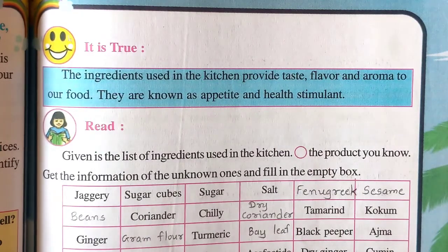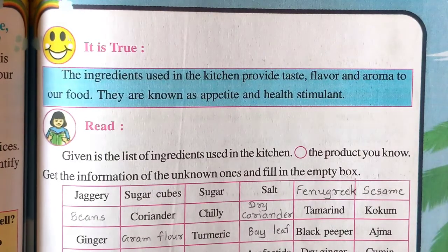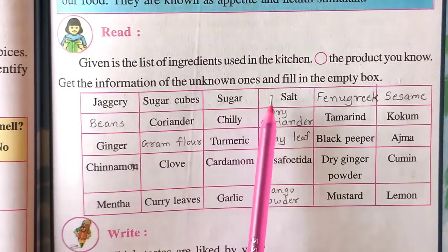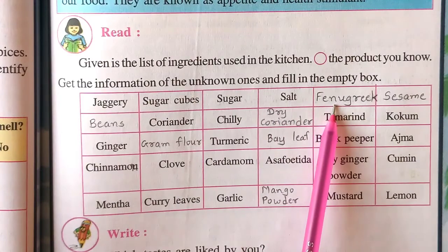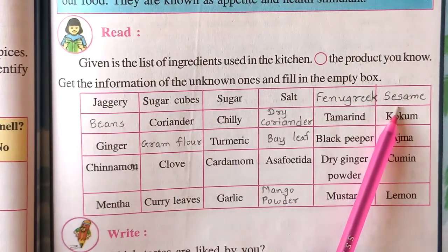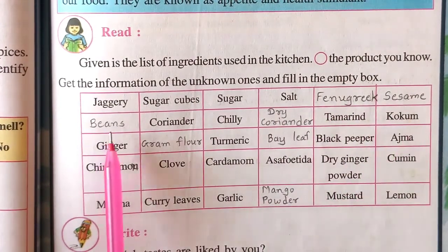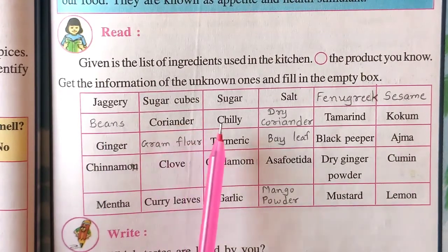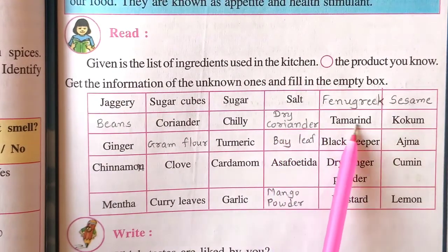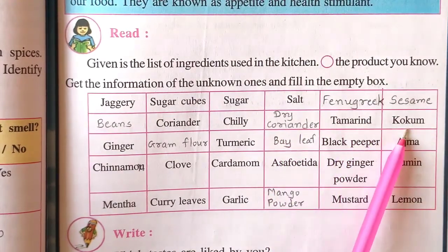I know each and every spice, so I have not put a circle here, but you have to put a circle. Sugar, jaggery, sugar cubes, salt, fenugreek, sesame, beans, coriander, chili, dry coriander, tamarind, kokum.